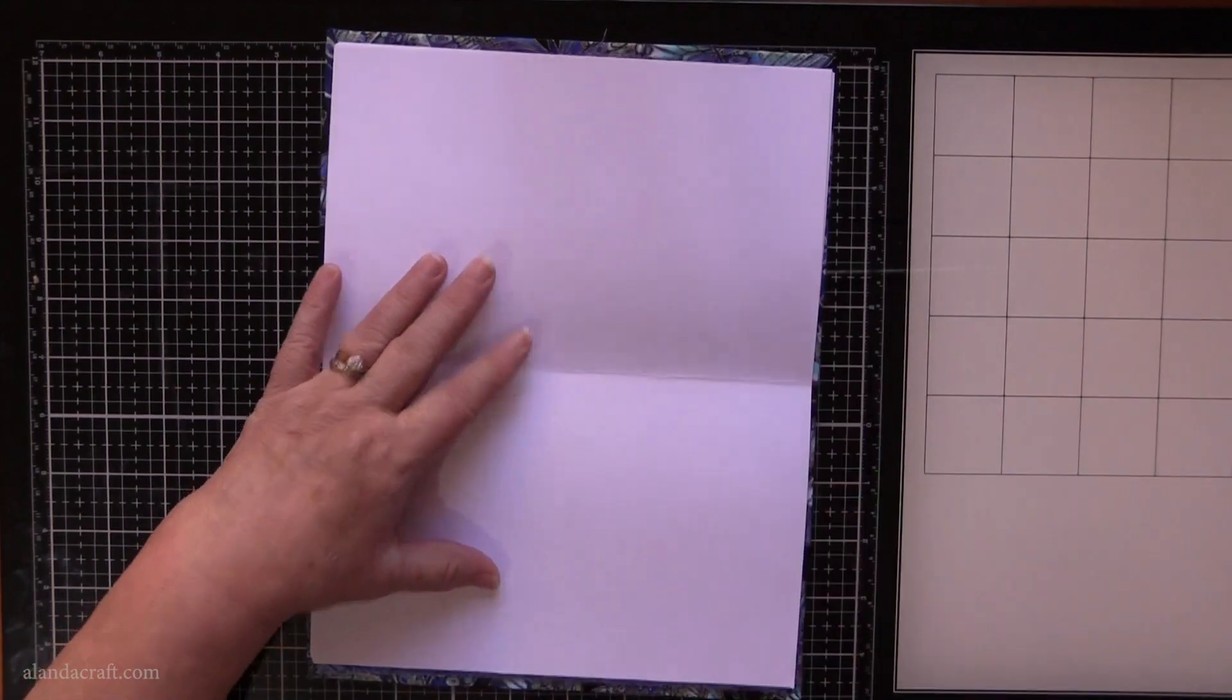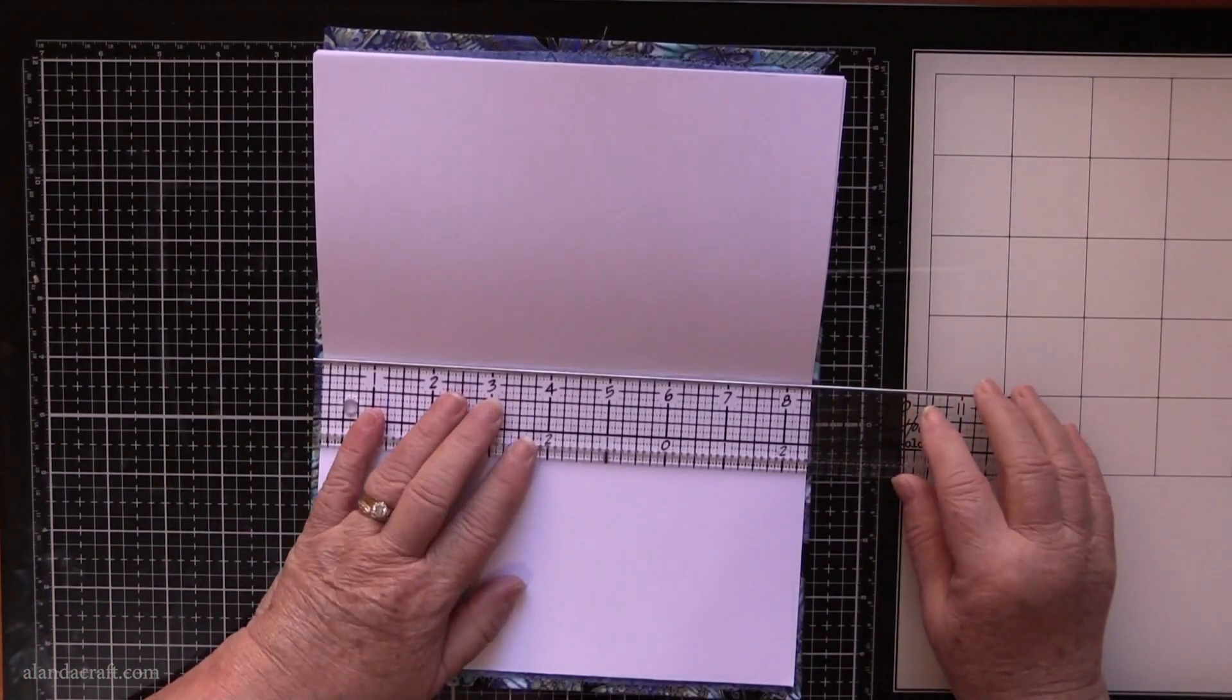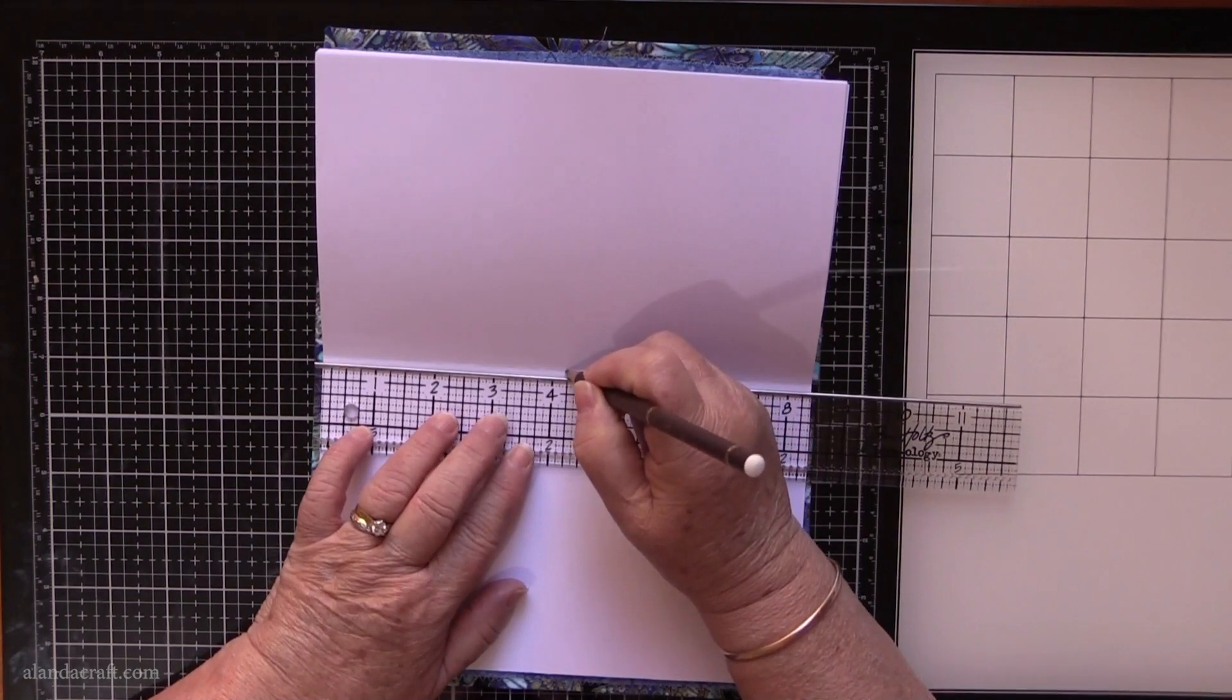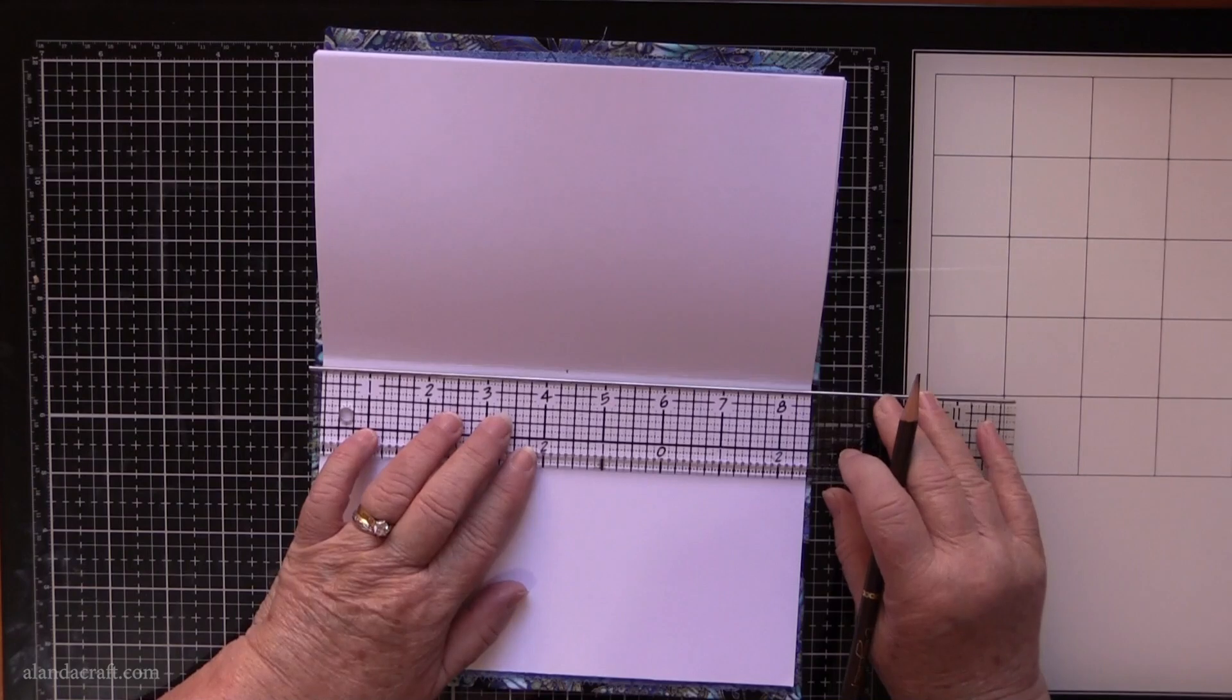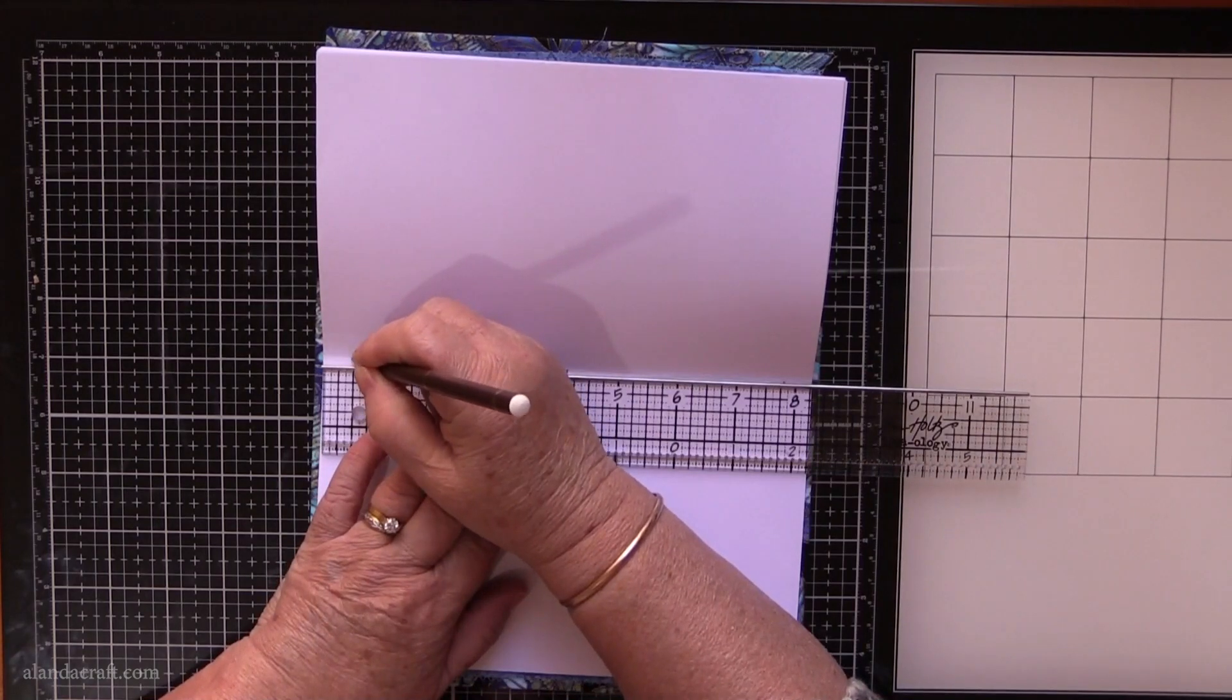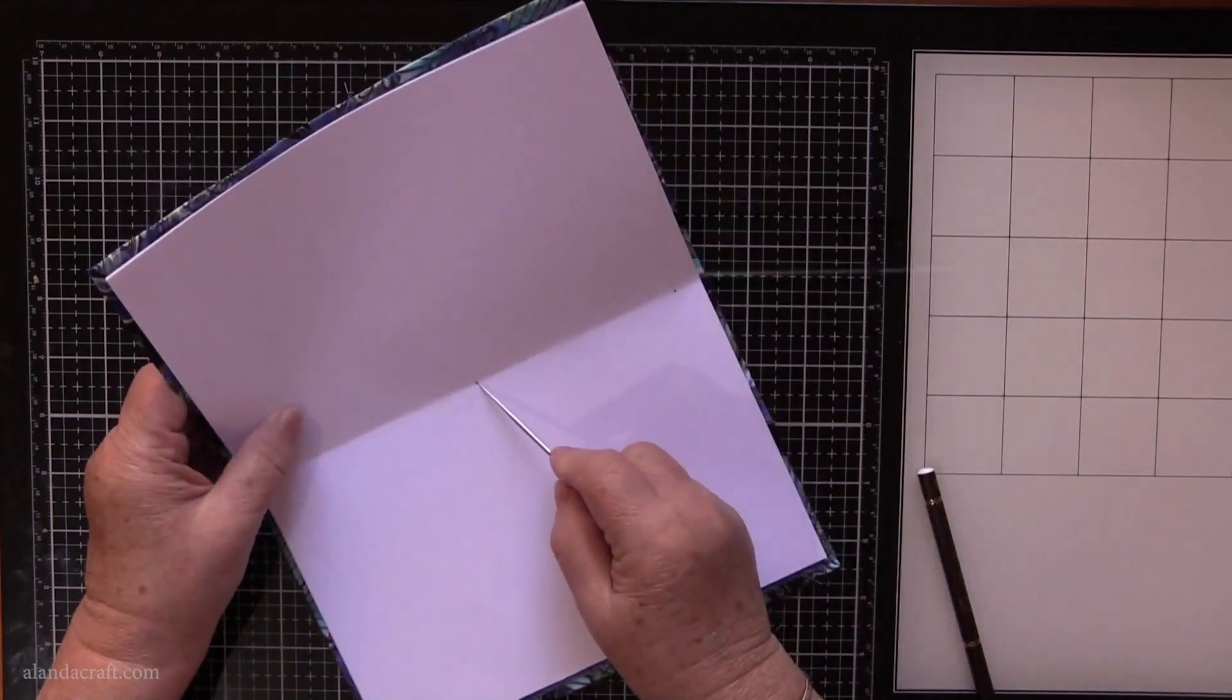Now you want to measure about halfway - you can eyeball it if you like, but I like to measure. About four and a quarter. You can put a pencil mark there if you like or you can just go straight in with your awl. I'm going to put a pencil mark and I'm going to come in half an inch from each end.